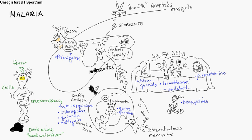There are sulfa drugs — chloroguanide with sulfa, trimethoprim with sulfa, and pyrimethamine with sulfa. Those can treat the erythrocyte form. Also doxycycline, and then inside the erythrocyte,